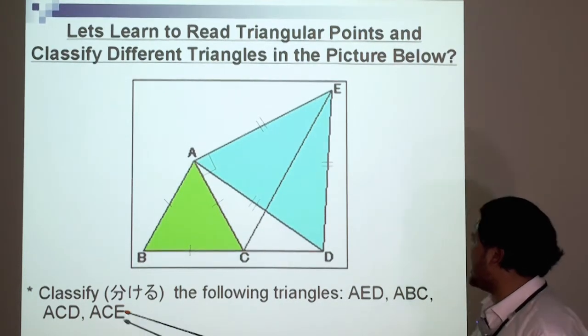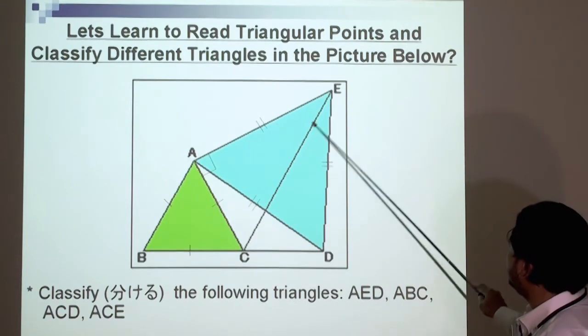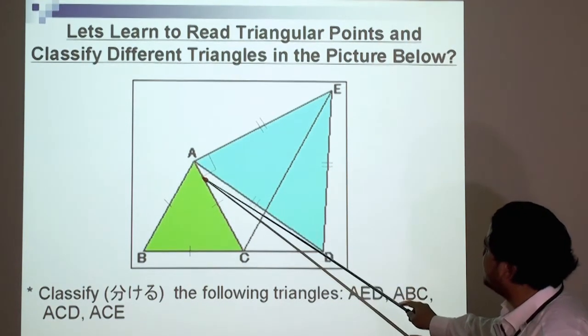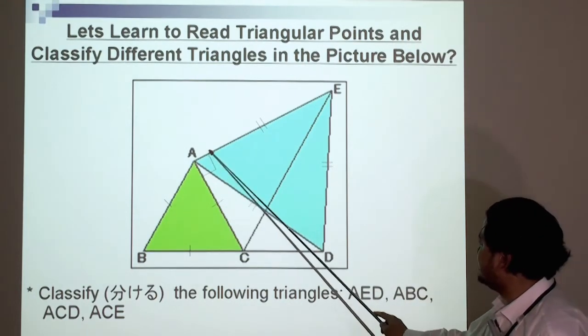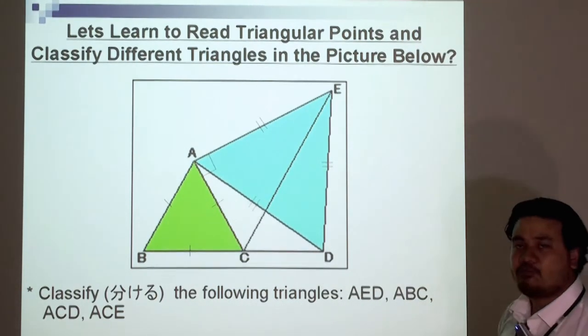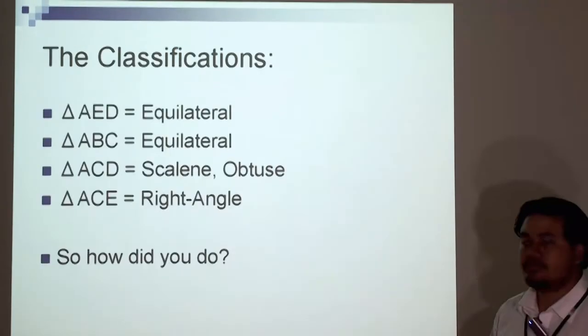And our last triangle, A, C, E. What do we notice here? That square box shows that this is 90 degrees over here. So it's a right angle triangle or right triangle.